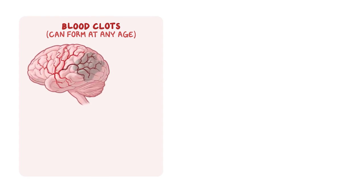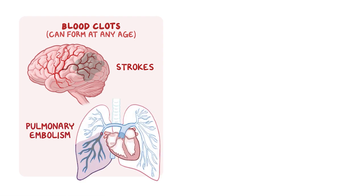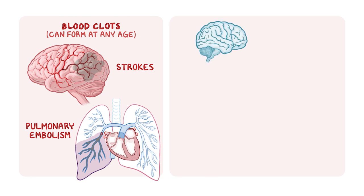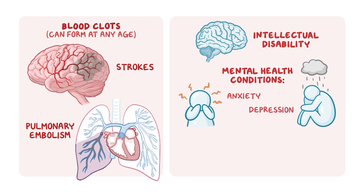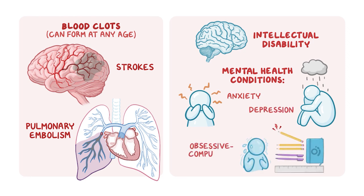Blood clots can also form at any age, causing the most serious complications of CBS deficiency depending on the location of the clot. These complications include strokes from clots in the brain and pulmonary embolism from blood clots in the lungs. Individuals with classical homocystinuria may also have intellectual disability or experience mental health conditions such as anxiety, depression, and obsessive-compulsive disorder.